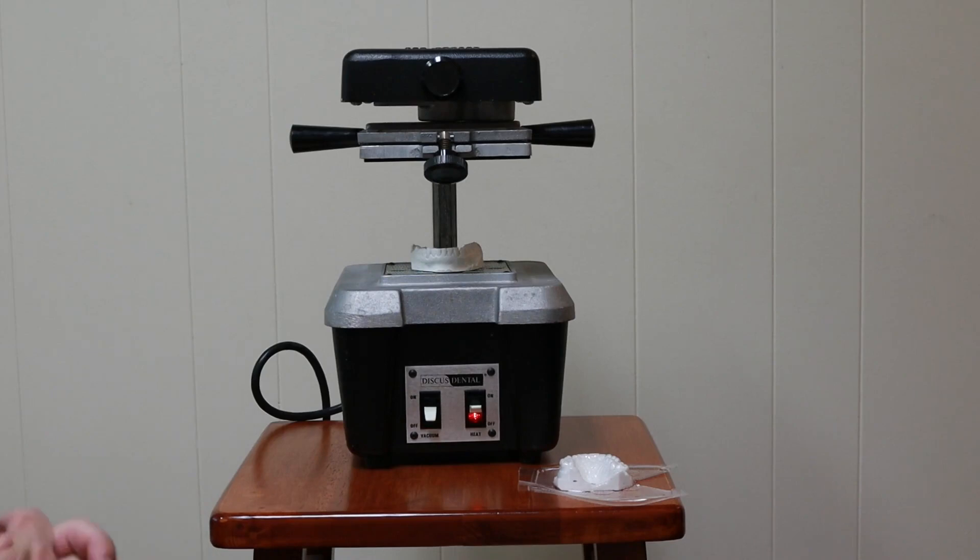My vacuum forming machine is an older model. I probably bought it 20 something years ago. It's labeled a Discus Dental brand, which I don't think is around anymore. They got bought out by somebody. They used to make bleaching products, white bleaching gels, and all the products associated with whitening, including vacuum forming machines.